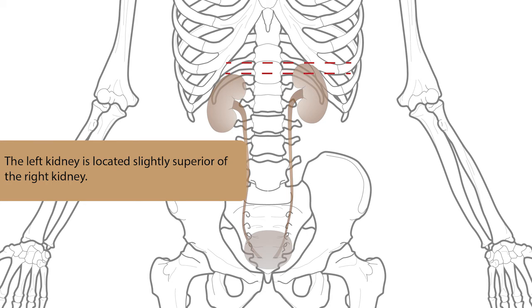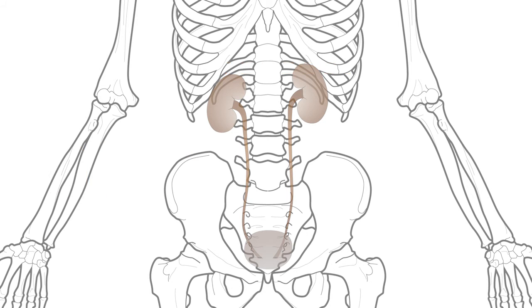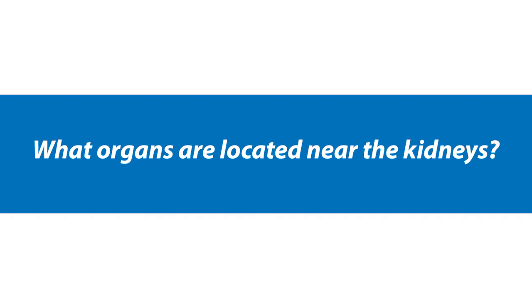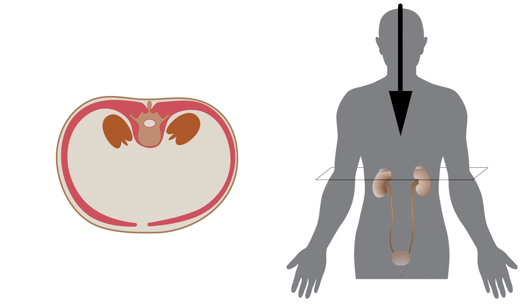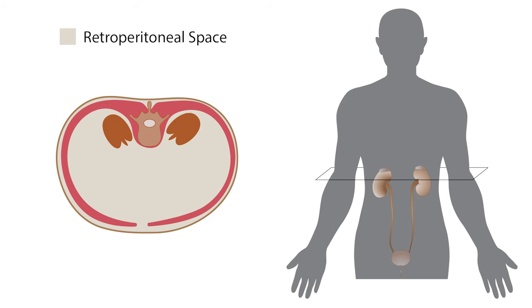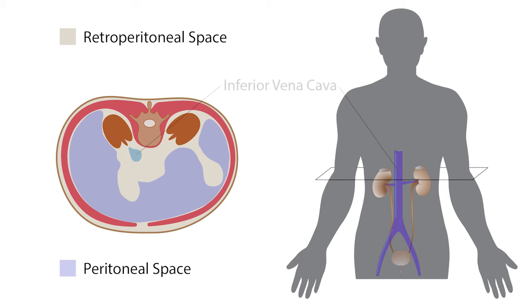To get a better idea of the relationship of the kidneys to other organs, let's make a transverse cut along the abdomen. From this transverse section we see both kidneys are located dorsally and just lateral of the vertebra. The area where the kidneys are located is referred to as the retroperitoneal cavity or space, which is situated behind the peritoneal cavity or abdominal cavity.